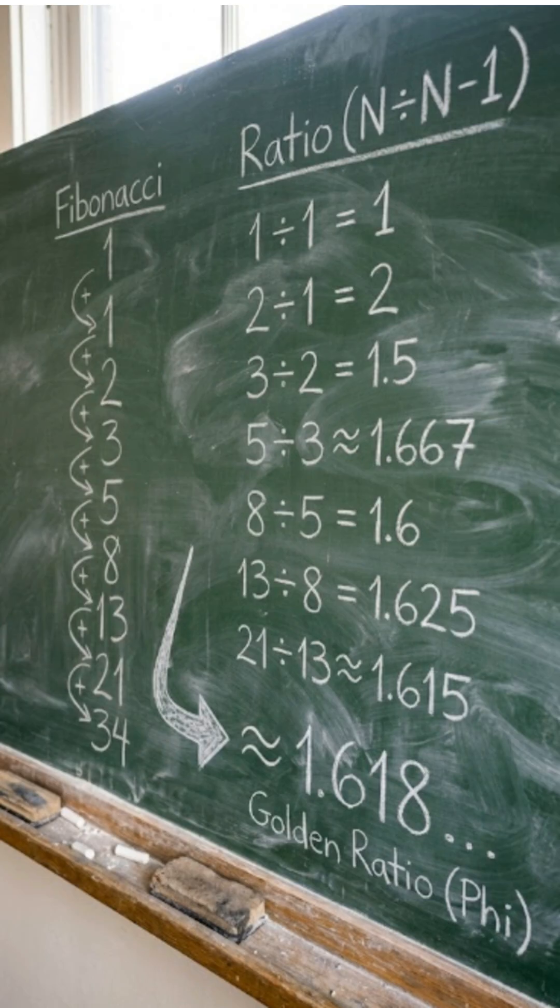If you take a number in the sequence and divide it by the one before it, like twenty-one divided by thirteen, the result gets closer and closer to one point six one eight. That number, one point six one eight, is called the Fibonacci constant, or more famously, the golden ratio.